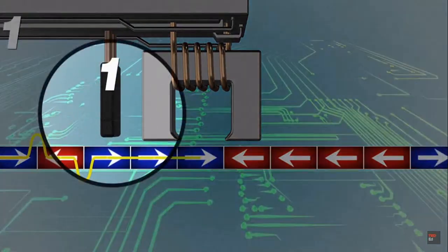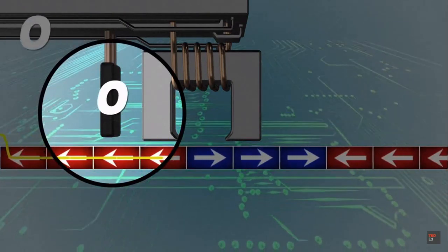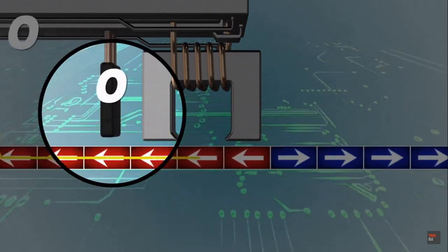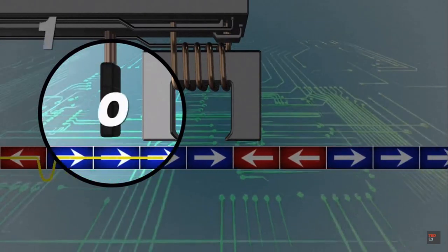Once this information is written onto the disk, the drive uses a magnetic reader to turn it back into a useful form, much like a phonograph needle translates a record's grooves into music.